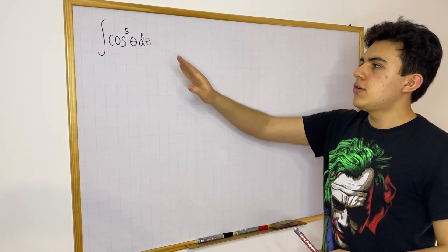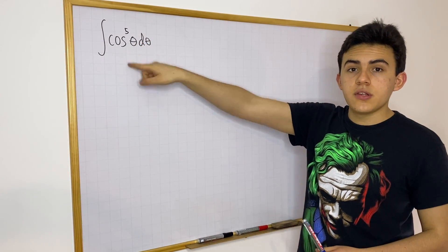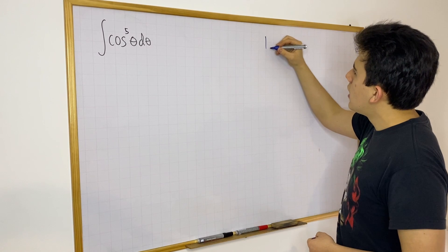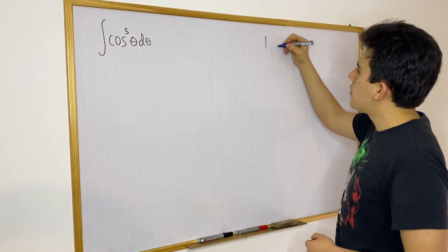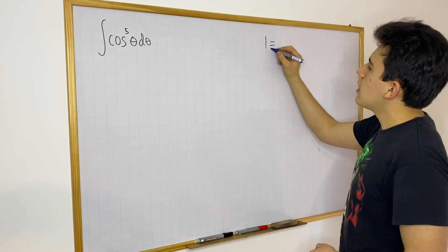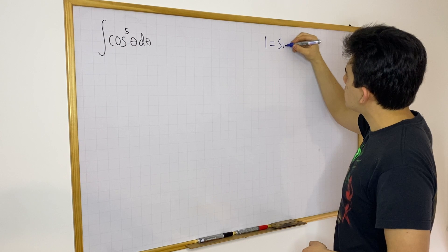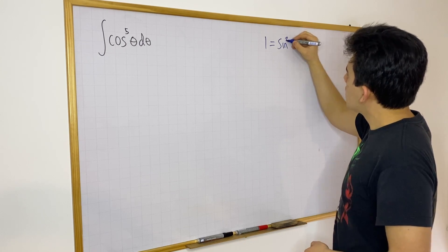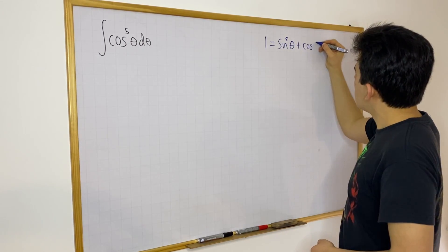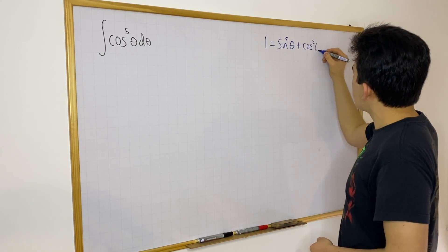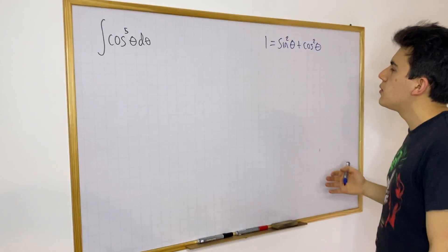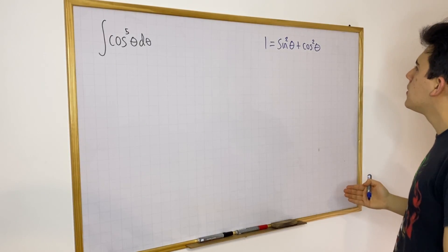So first of all, we want to rewrite cosine to the fifth power, and we're going to use the famous Pythagorean trigonometric identity: 1 is equal to sine squared theta plus cosine squared theta. This is a famous identity, hopefully you're aware of it by now.